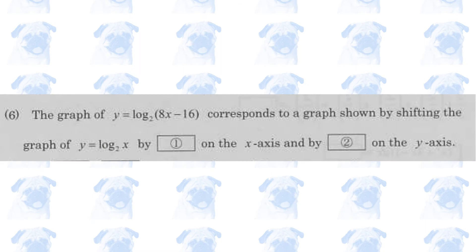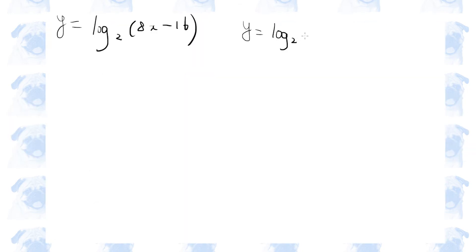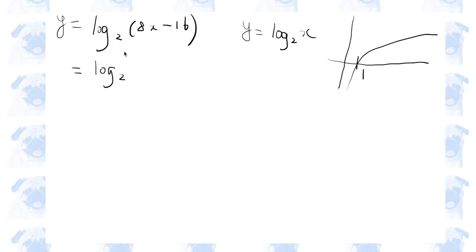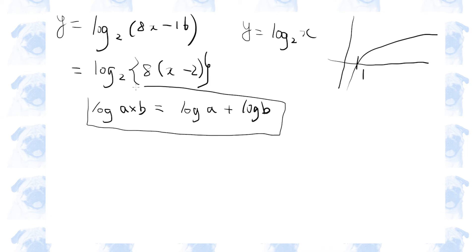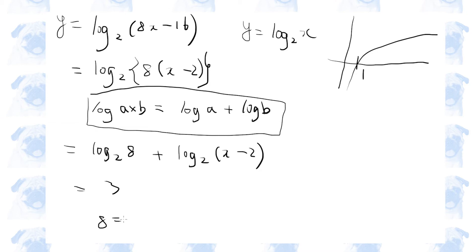Number 6. Remember that the graph of log base 2 of X looks like a standard logarithmic curve. Let's first simplify — we can take 8 out of these two terms. Recall that log of A times B, regardless of the base, can be rewritten as log A plus log B. Using this rule, we get log base 2 of 8 plus log base 2 of X minus 2. Log base 2 of 8 is 3, because 8 is 2 cubed.